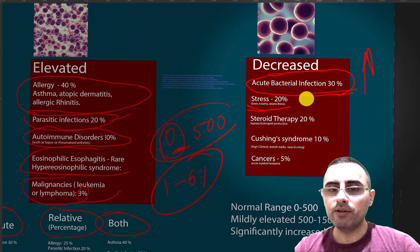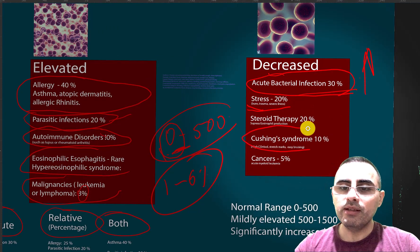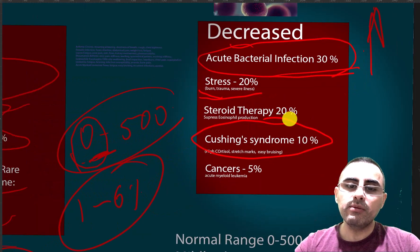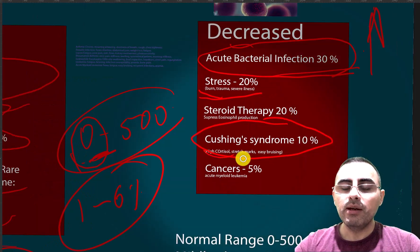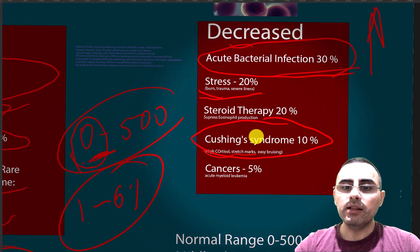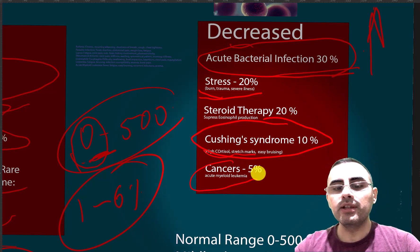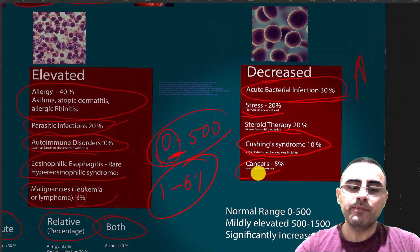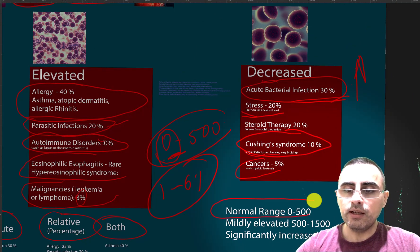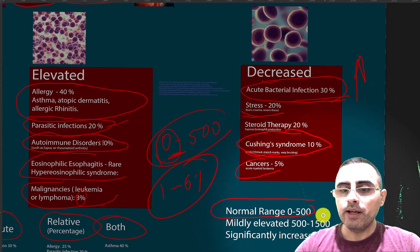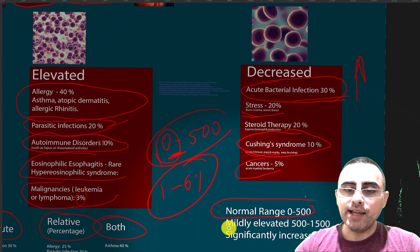Steroid therapy is also a cause in about 20% of cases. Cushing's syndrome is an important cause — during Cushing's syndrome, cortisol levels are increased and the patient has stretch marks and easy bruising. Cancers such as acute myeloid leukemia can also cause decreased eosinophil levels.